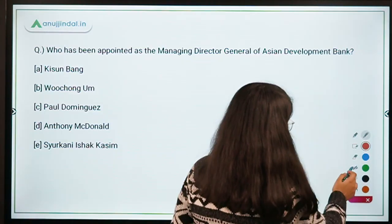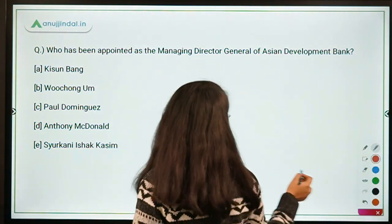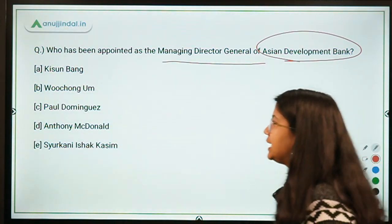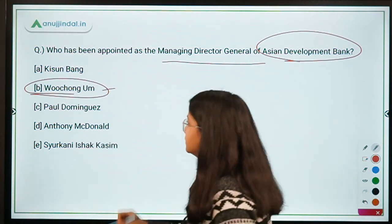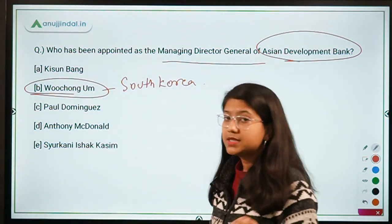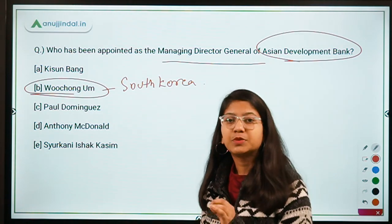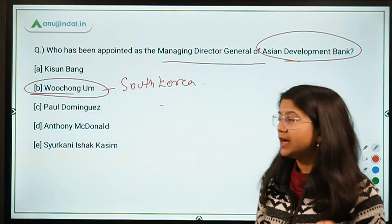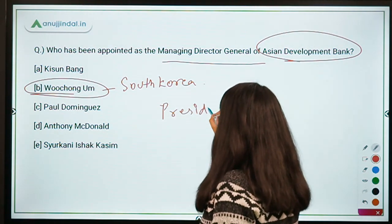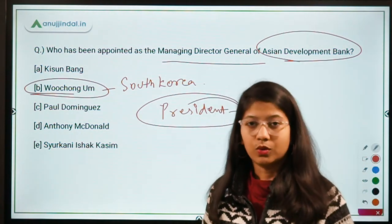Our first question is: who has been appointed as the Managing Director General of the Asian Development Bank? Out of the five options, the right answer is Wuchung Um, and he belongs to South Korea. Whenever there is an appointment to an international organization, your first responsibility is to check which country that person belongs to. Now, who is the President of the Asian Development Bank? Tell me in the comment section below.